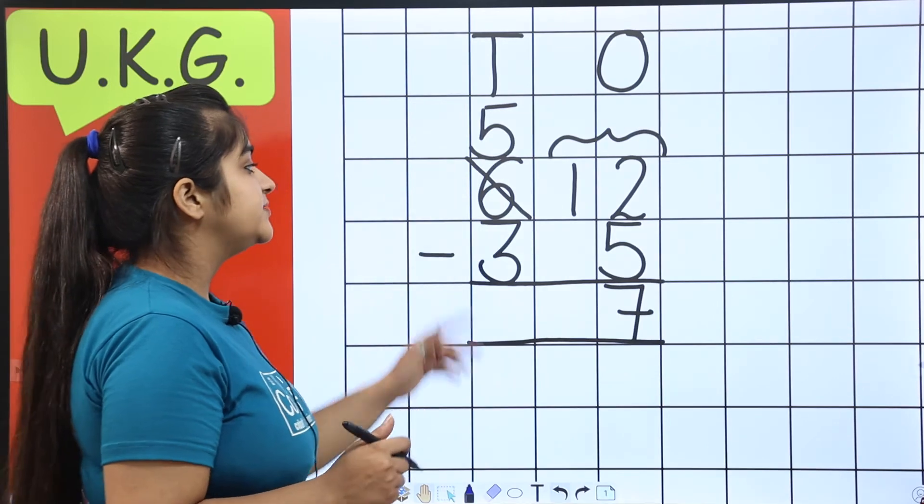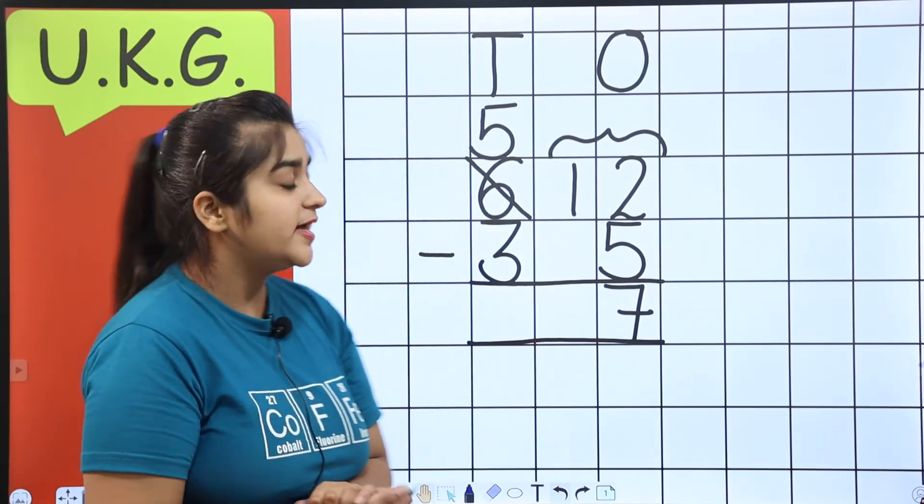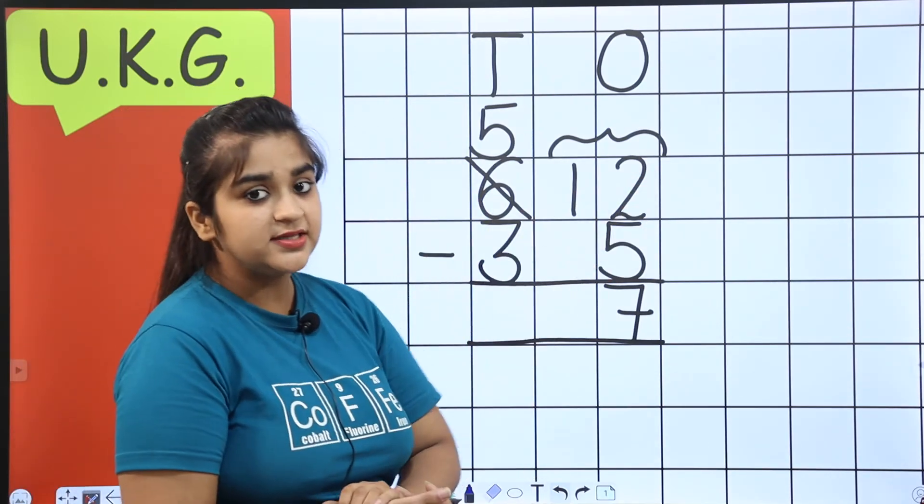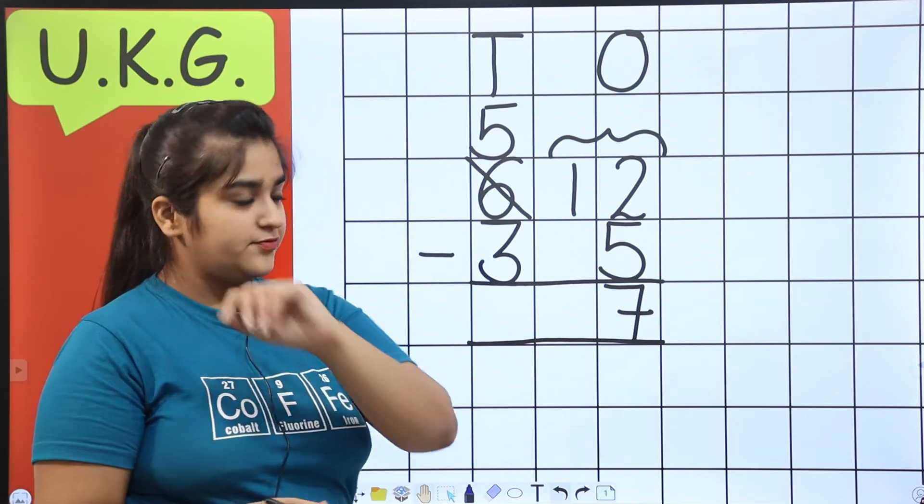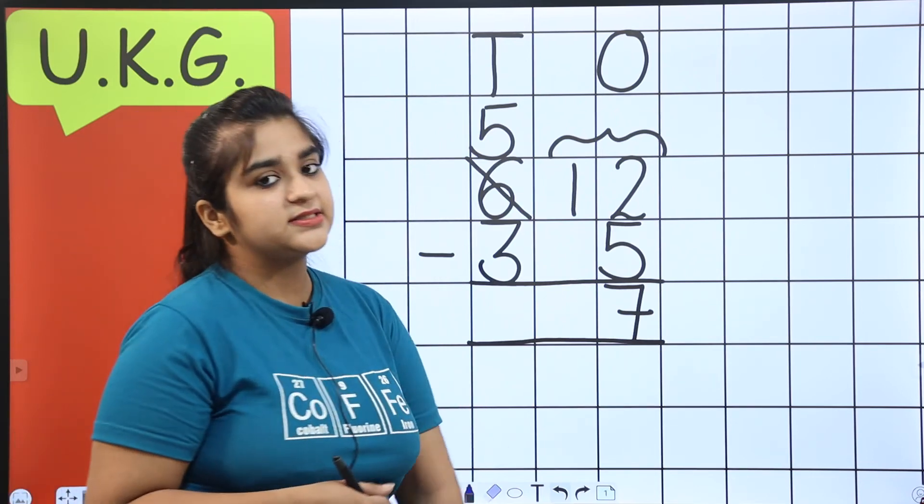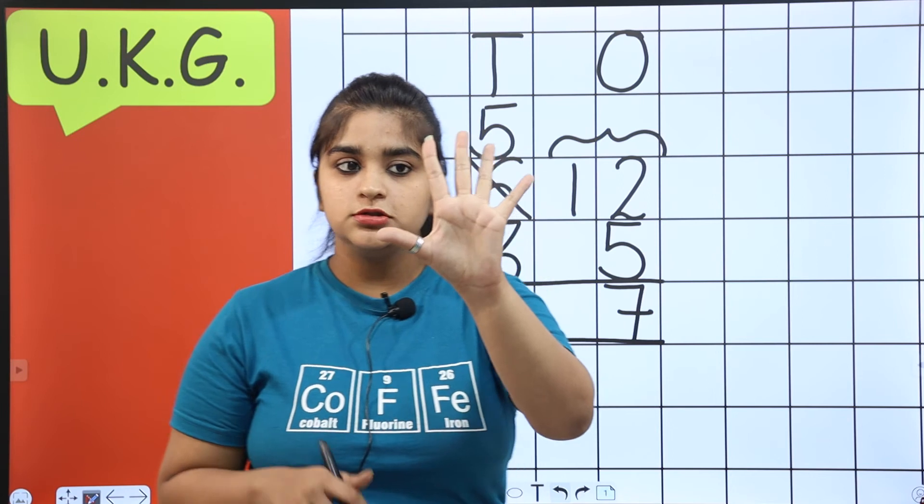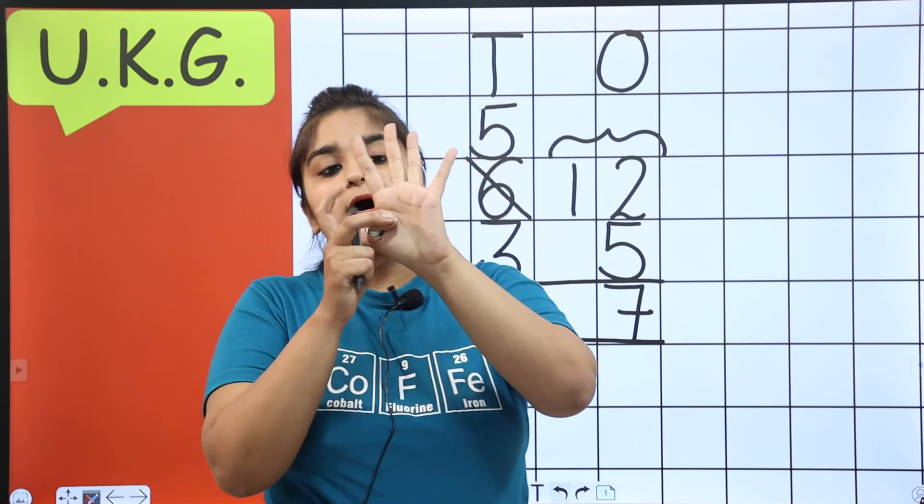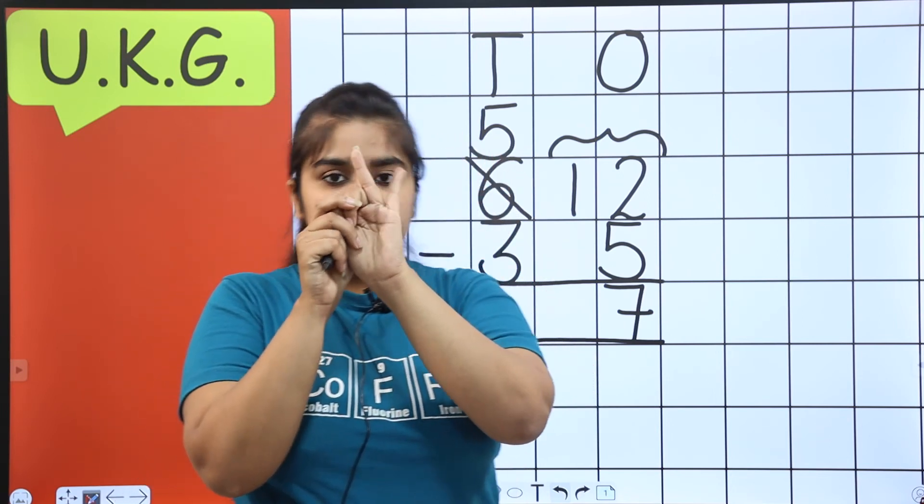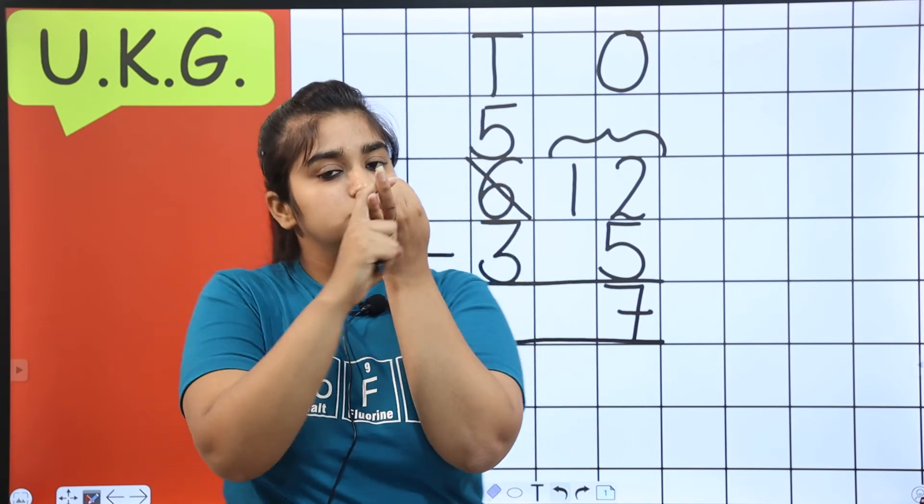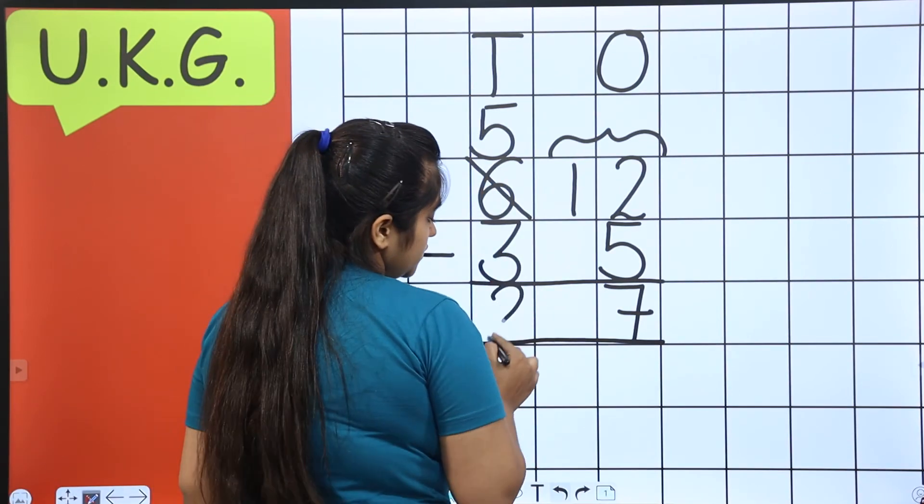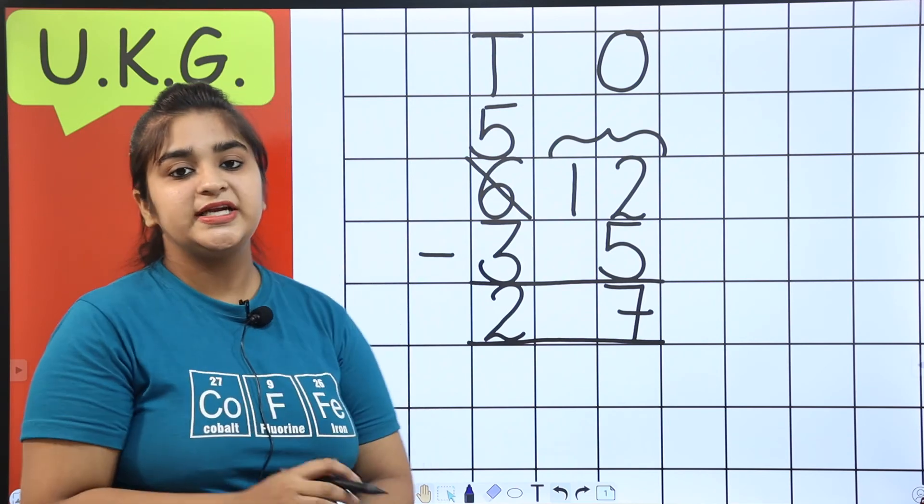Now go to the next. Now next, we have 6 minus 3, but we don't have to do 6 minus 3. Because 6 had given his 1. So what's left? 5. Now 5 minus 3 we have to do. Open 5 fingers. And we have to subtract 3. 1, 2 and 3. We closed 3, how many are left? 1 and 2. So what's the answer? 27.